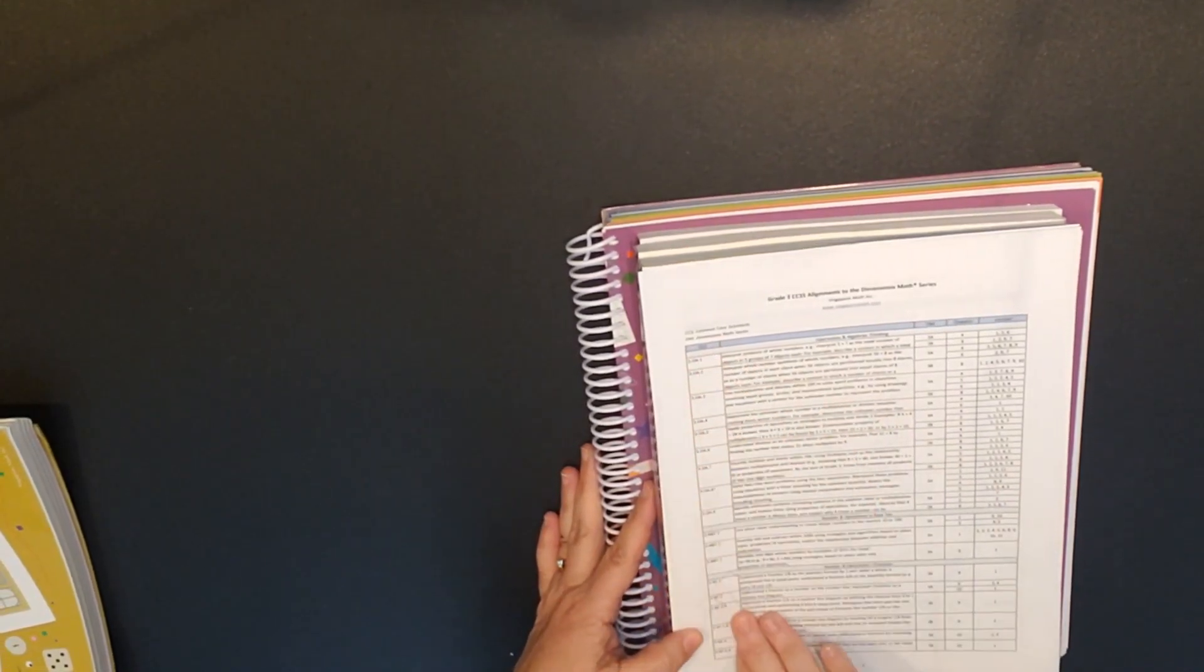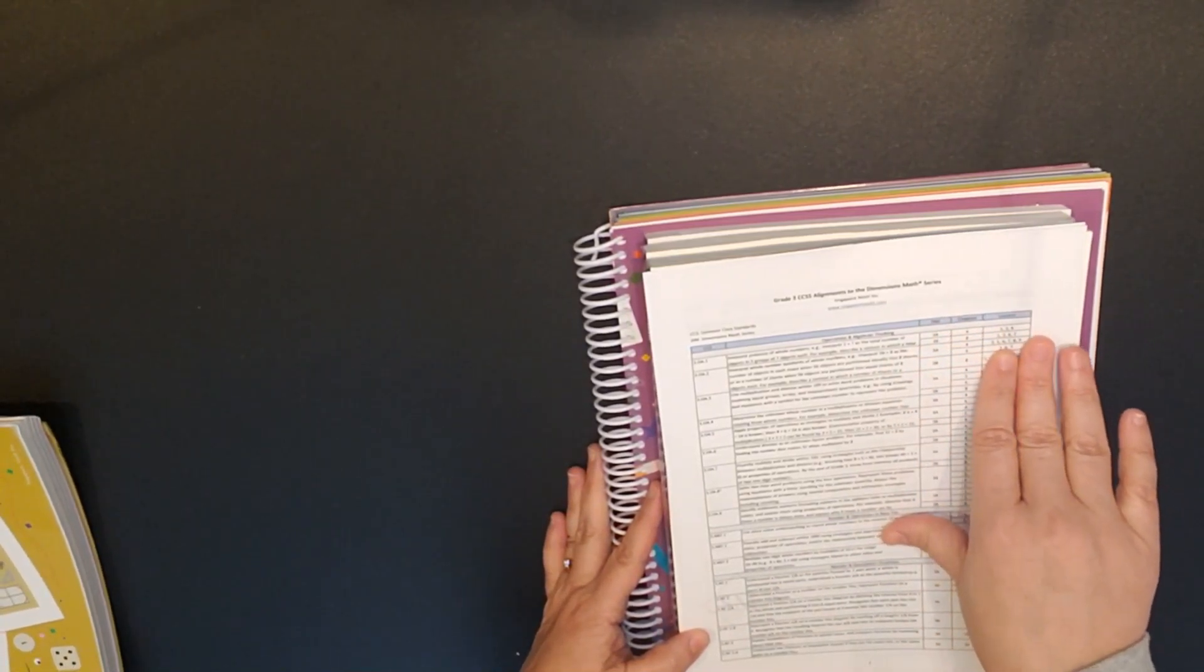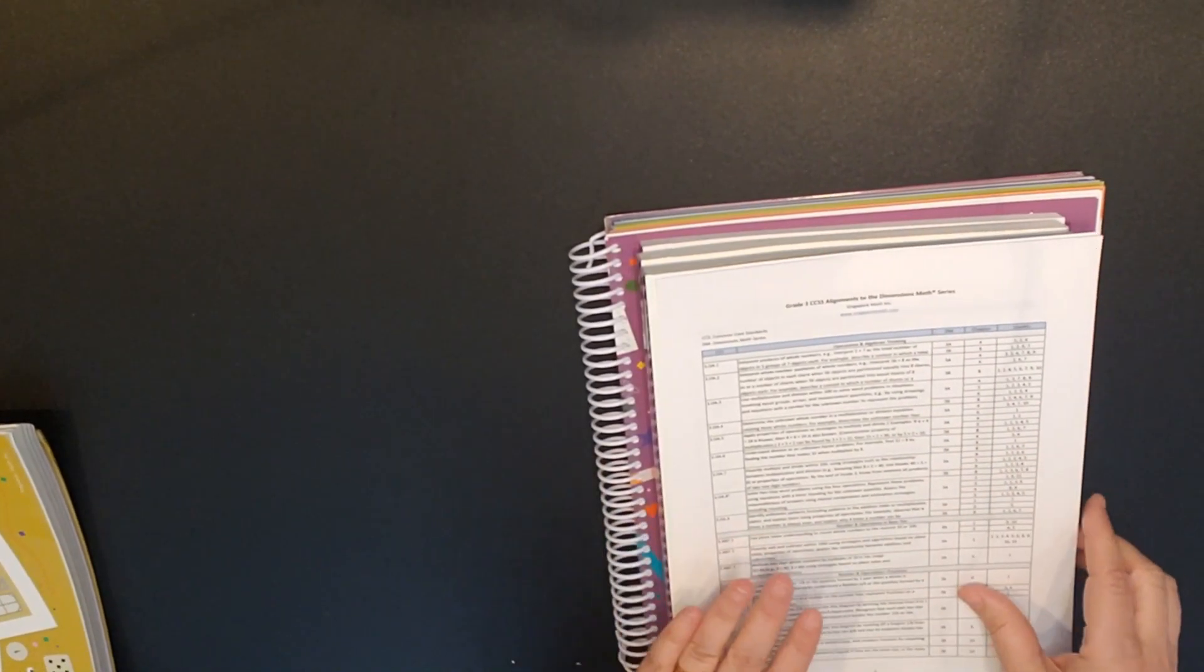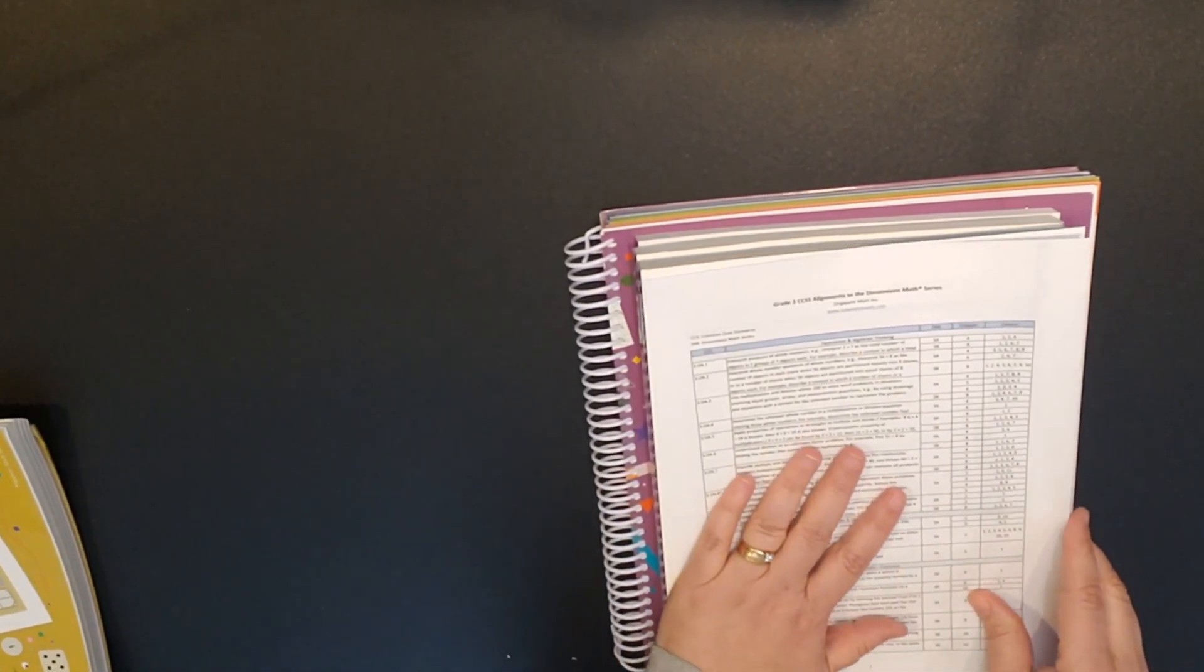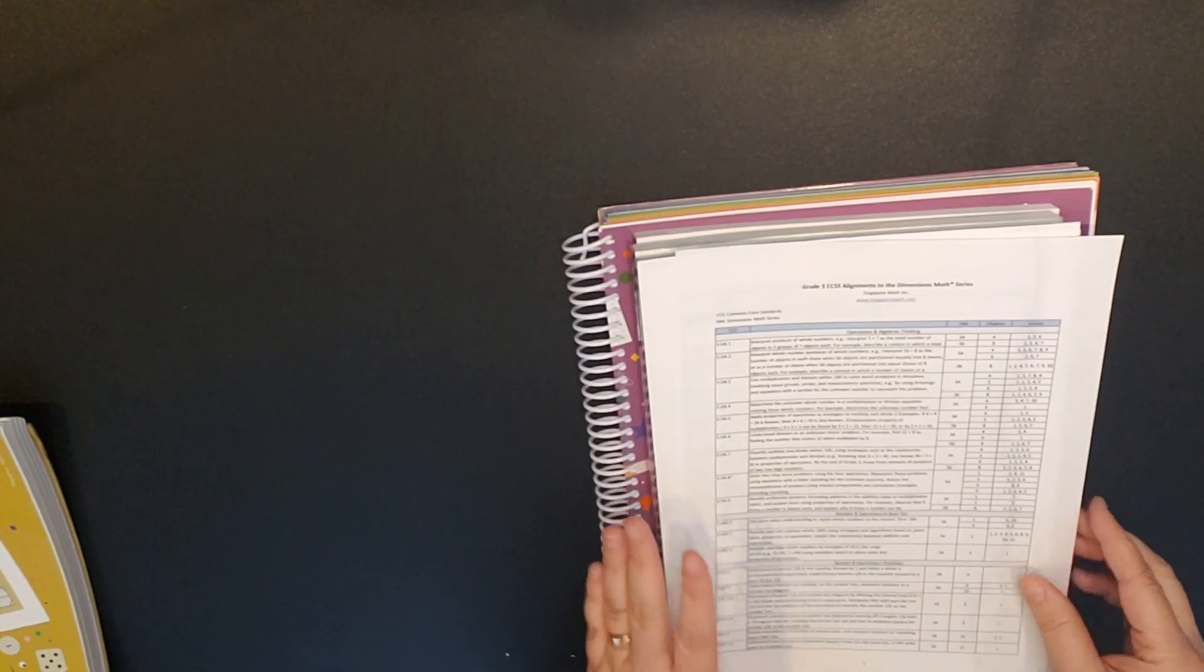You can print out the Common Core standard and then the chapter and lesson as to where in dimensions math this standard is taught. So if Common Core is something that you need to stick with, just know that dimensions math is Common Core aligned.